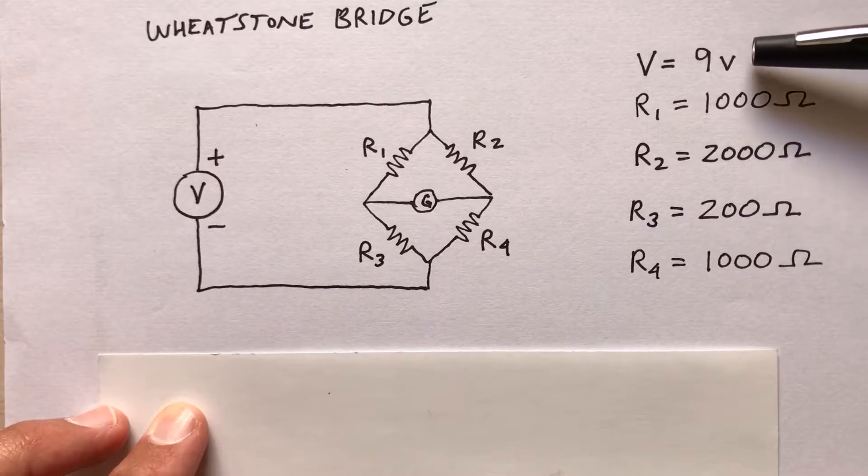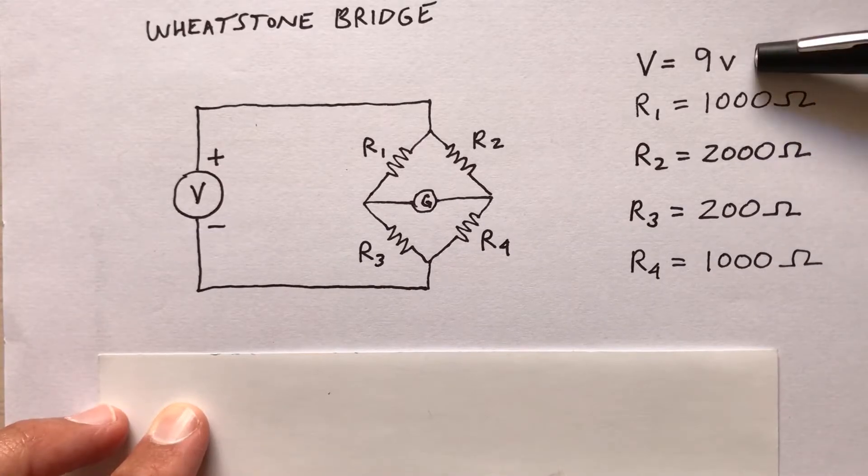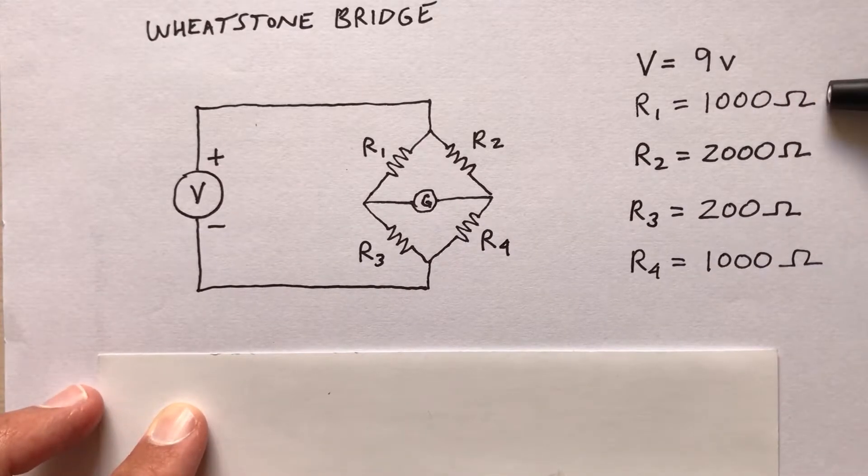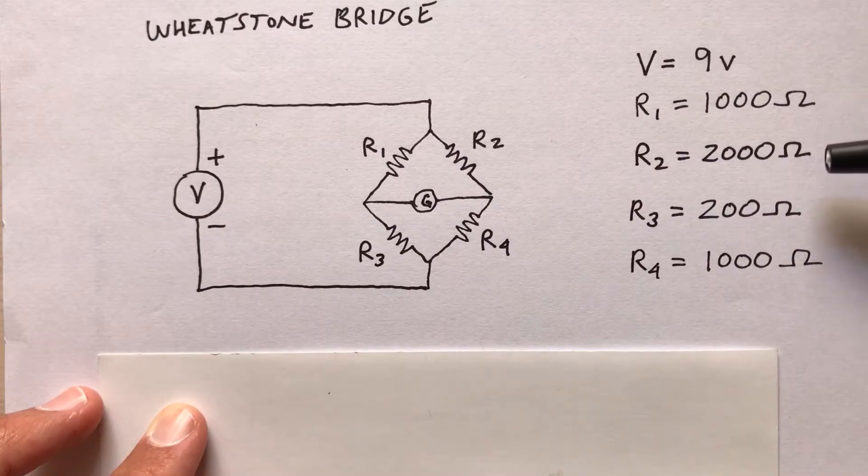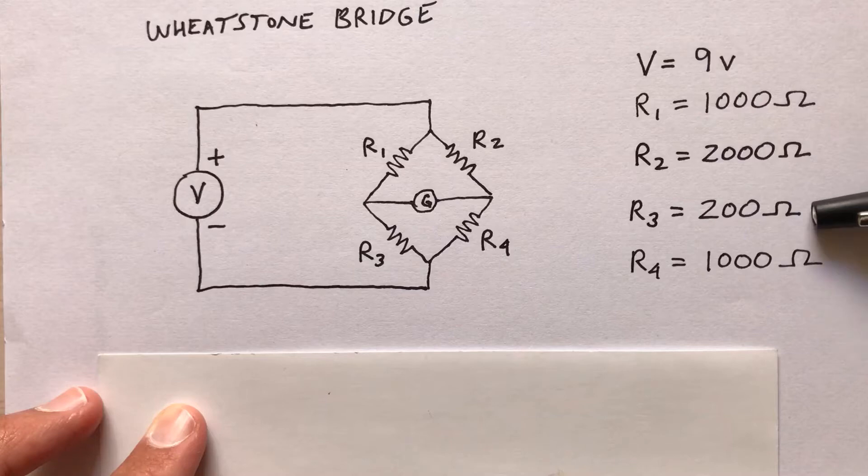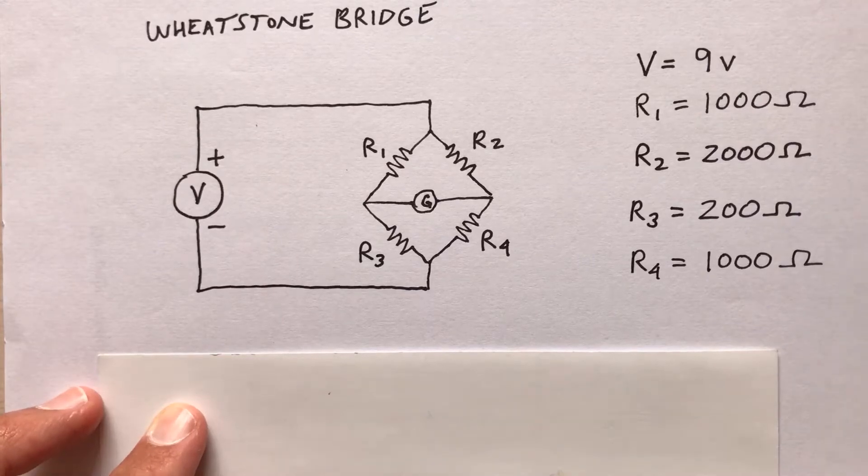I'm going to do an example here where the battery is a nine volt battery. So that's V. Resistance number one: 1000 ohms, resistor two: 2000 ohms, resistor three: 200 ohms, resistor four: 1000 ohms.